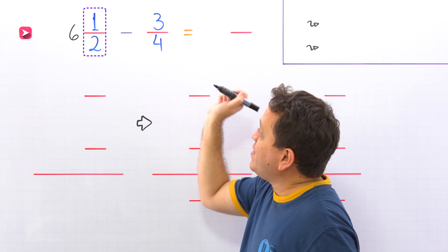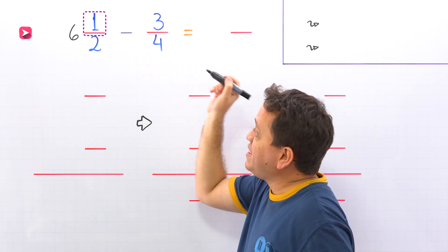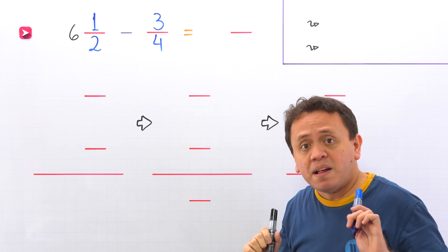One half is a proper fraction, given that the numerator 1 is less than the denominator. Nice! Are you ready for the example?